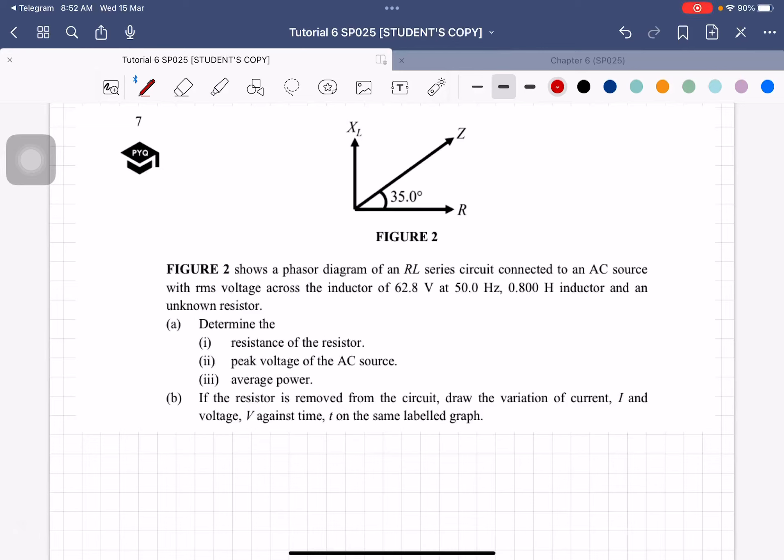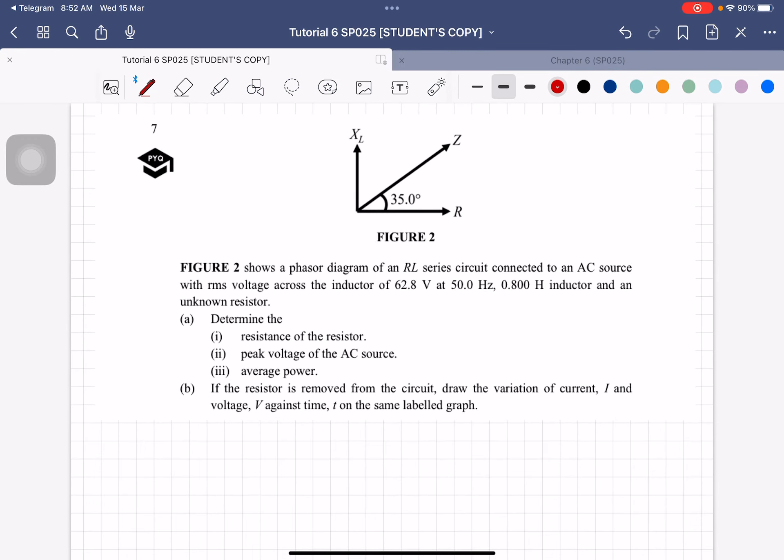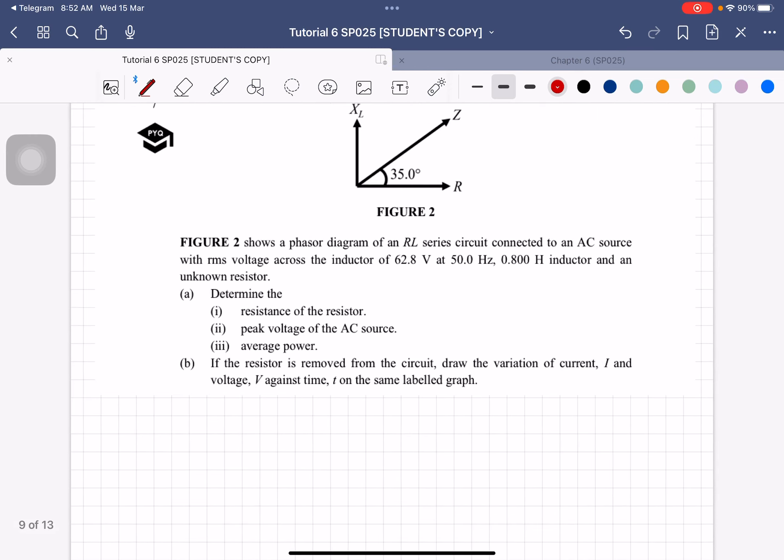Question number 7, we have a past year question here. So this is an RL series circuit. The RMS voltage of the inductor is 62.8 volt at 50 Hz frequency, the inductance is 0.8 Henry and an unknown resistor. So we have to determine the resistance of the resistor.